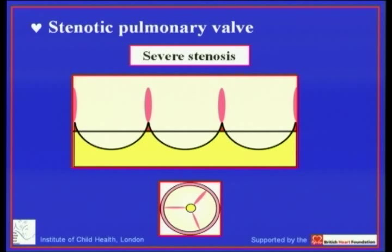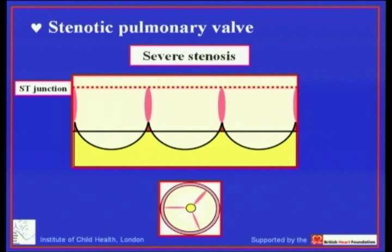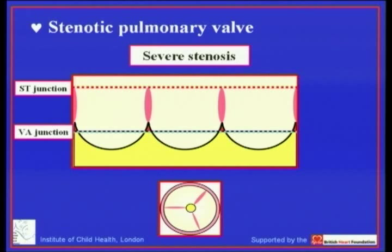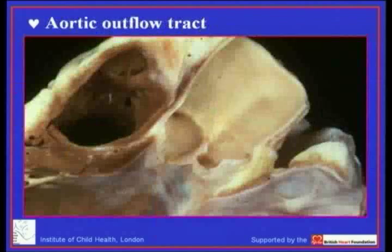It is paradoxical that the more stenotic the valve becomes, the further the attachment of the valvar leaflets moves away from the sinutubular junction. It approaches the ventricular arterial junction, and only when the valve is severely stenotic do we truly see an annular attachment of those valvar leaflets.